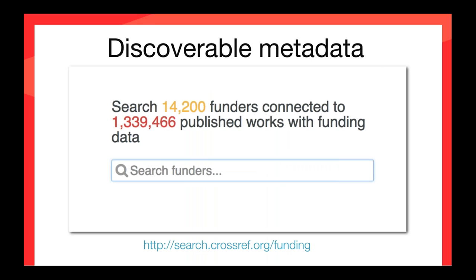This means that publishers, funders, and any interested party can search on it. You can either do that through our funding data search, which is the screen I'm showing at the moment, or you can do it through one of our query APIs. Funding data search is a very specific interface built for looking up funding bodies and seeing papers that have resulted from their grants. Of course there are also ways to look up any of the metadata in the Crossref database through Crossref Metadata Search, which is a slightly different take on this interface.